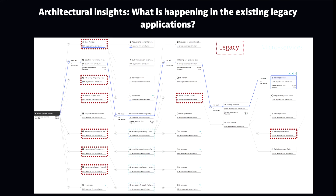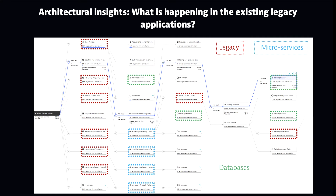This is a view called service flow, another visualization of the same data, showing a real-time picture of what's happening. It's an example of understanding what downstream services are called, and as you make decisions on migration patterns, it helps identify and understand the usage, volumes, and dependencies.